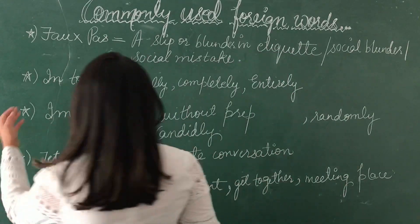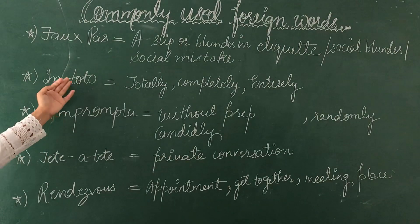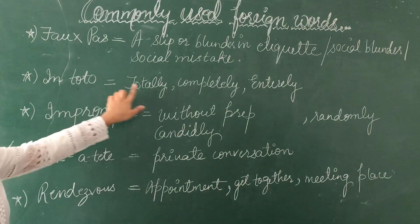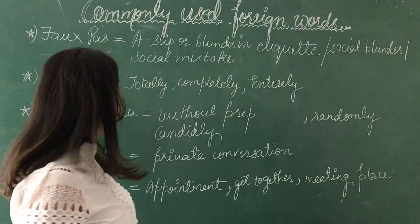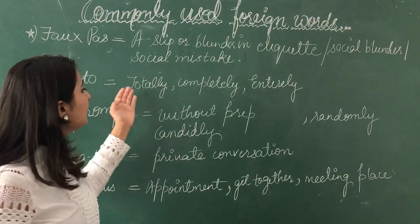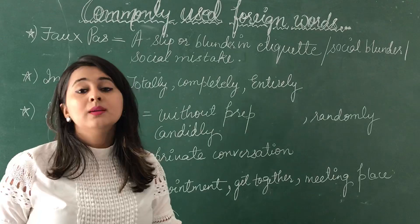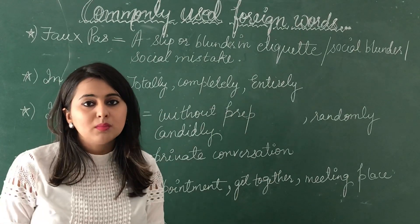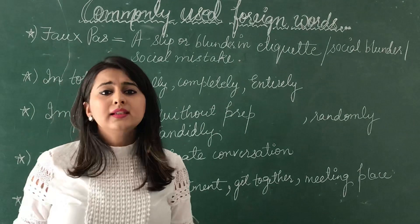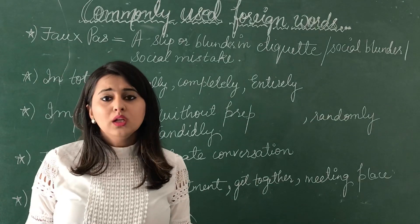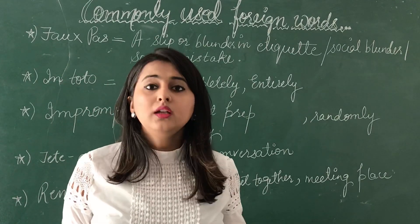The next word we are going to learn is 'in toto'. The word 'totally' is actually derived from 'toto', so it's easy to remember. In toto means totally, completely, entirely — when we are talking about something in a complete sense. For example: the proposal was accepted in toto.